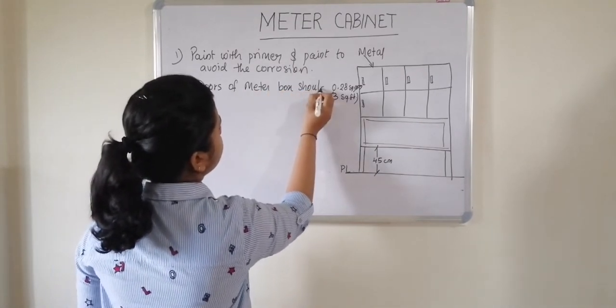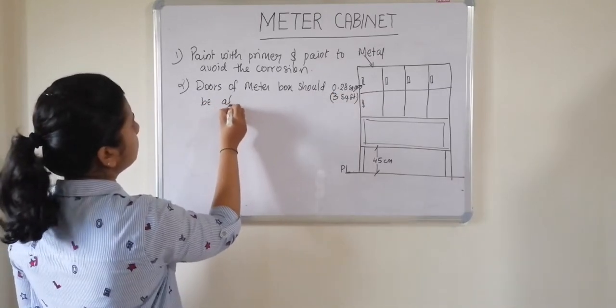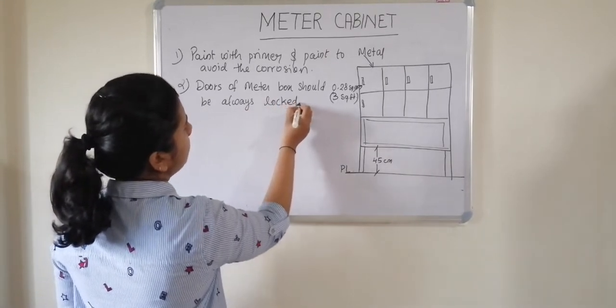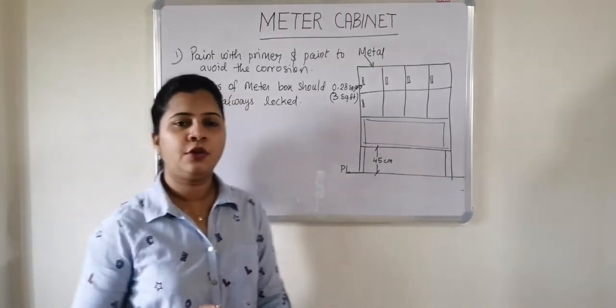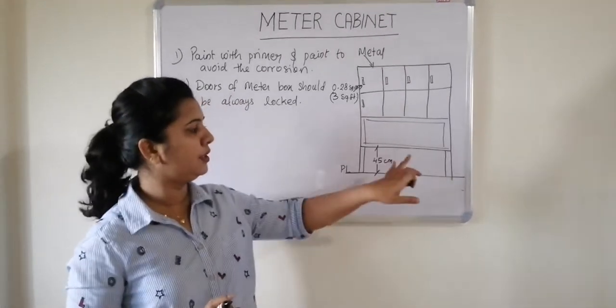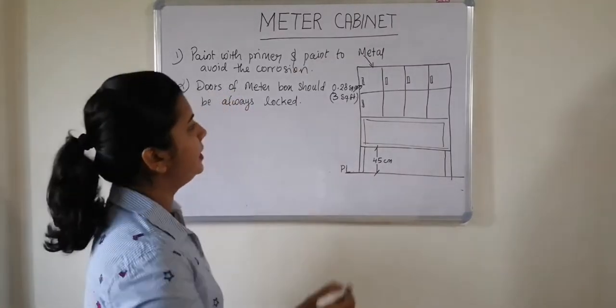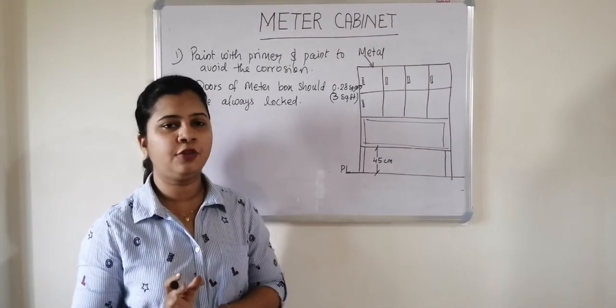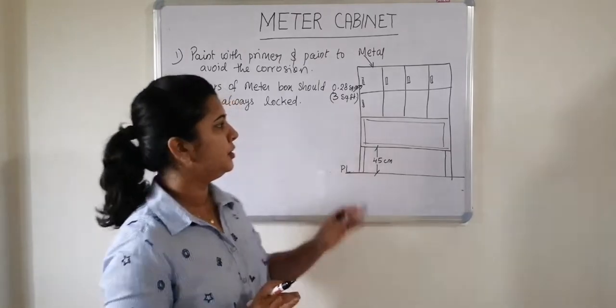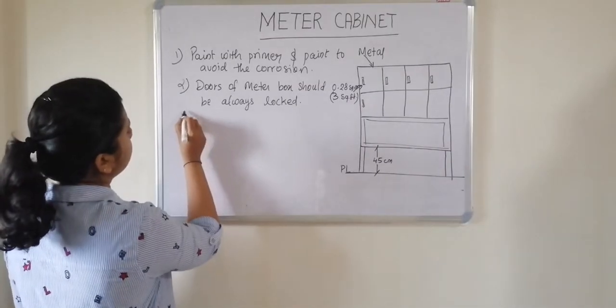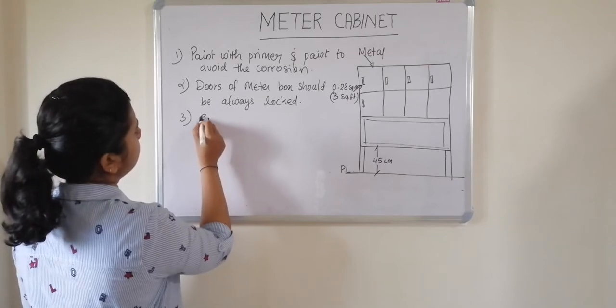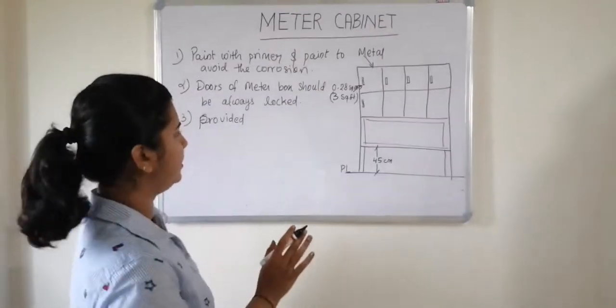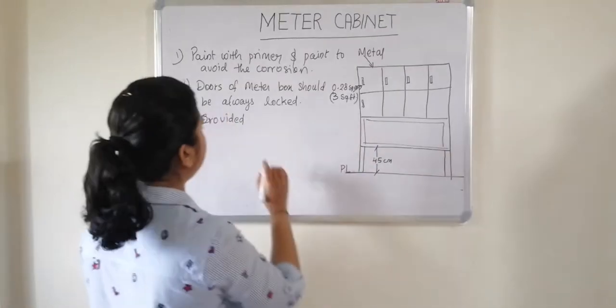Meter box is mostly provided at the entrance to make it easy for the meter reading access. So it is always provided at the entrance. There will be an electrical room provided at the entrance, and in that room this meter panel will be provided.